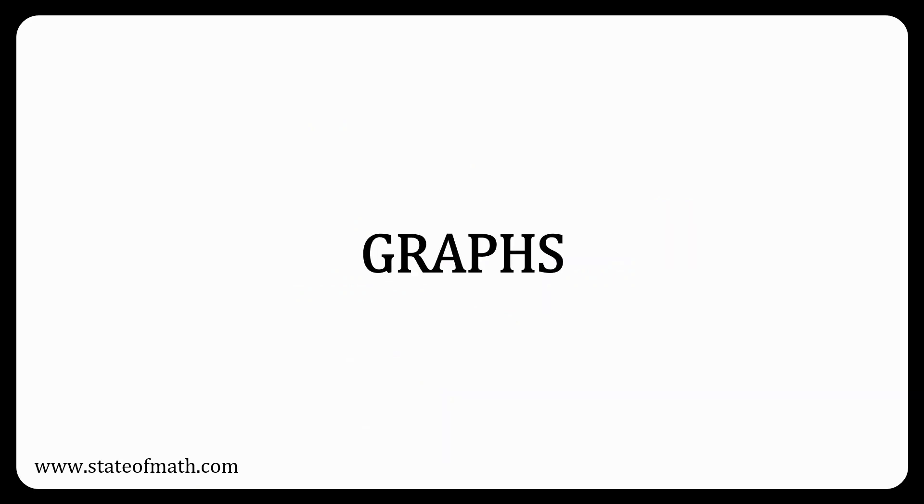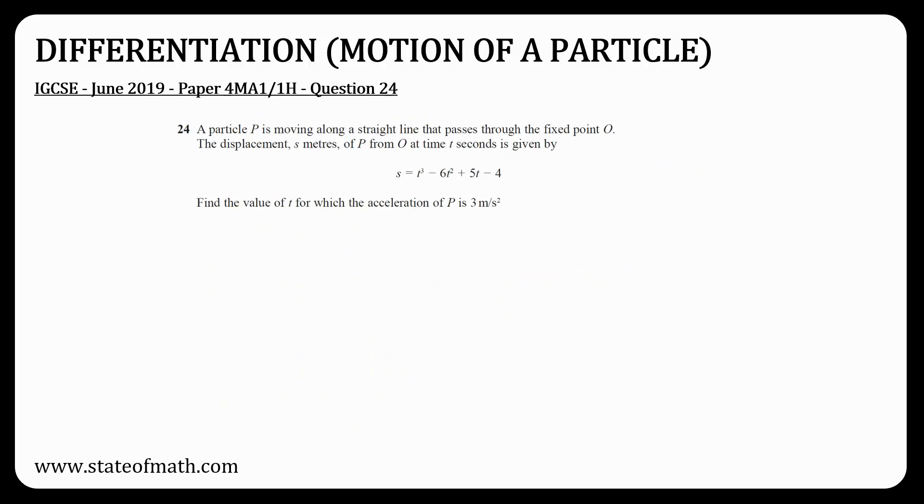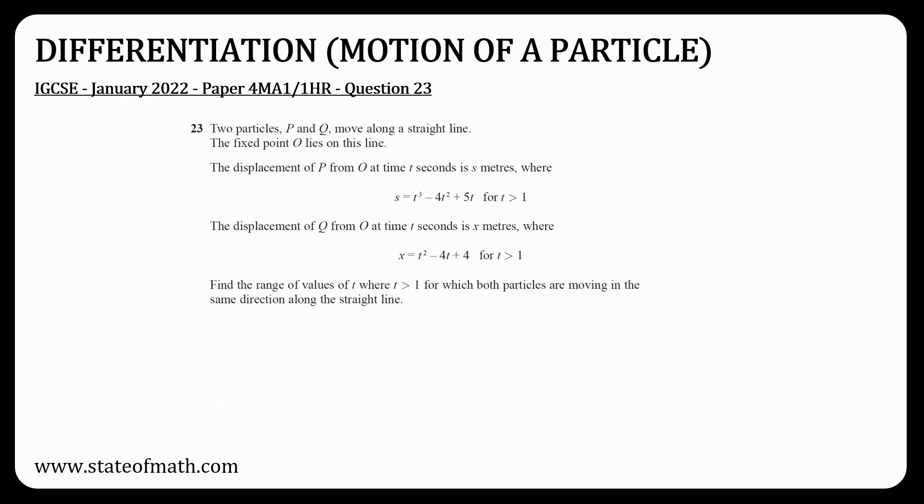Moving on to the graphs topic. Although a question on differentiation did appear on paper 1, it involved working with stationary points. There was no question on motion of a particle on a straight line where you had to work with displacement, velocity, and acceleration. It has happened before for both papers to have a differentiation question, one of each type, so I wouldn't exclude this type of question from my revision. Here is a relatively straightforward question and one of the most challenging ones for this topic.